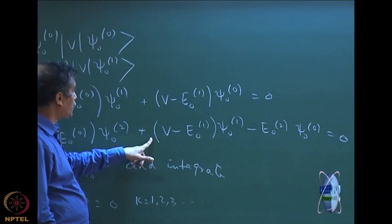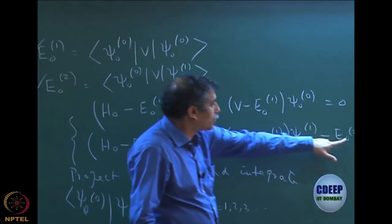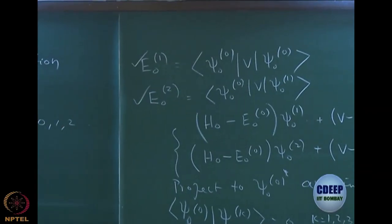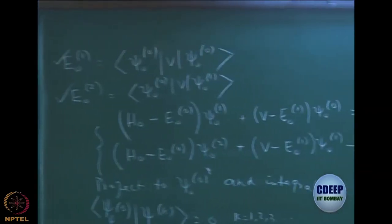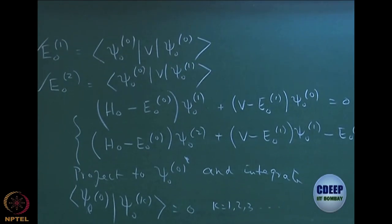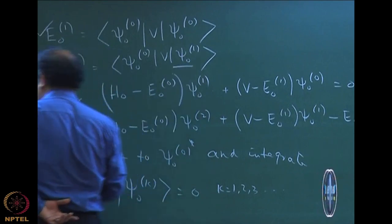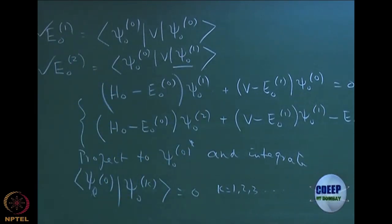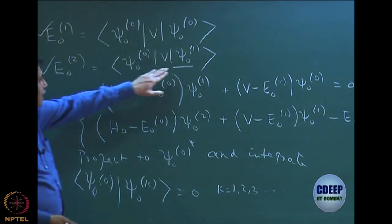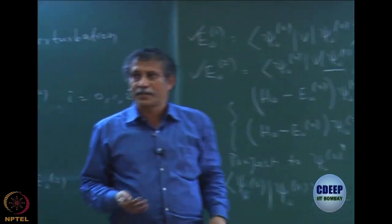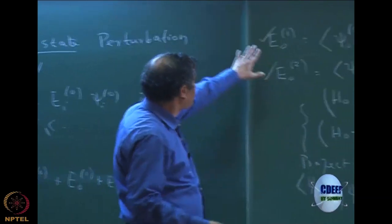So you only have ψ00 V ψ01 which equals E02 when I multiply and integrate. This is what we have done up to the last class. Now our task will be to evaluate ψ01. We have written an expression for E02 but it is not useful unless I know ψ01, since so far I do not know how to get the first order correction to the wave function.